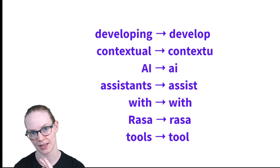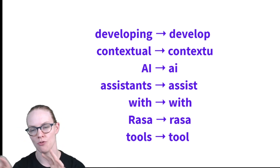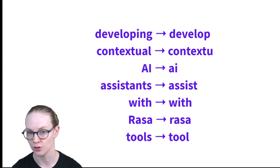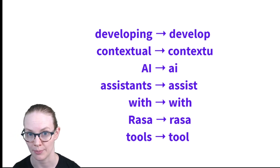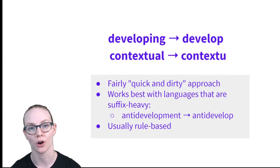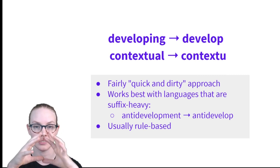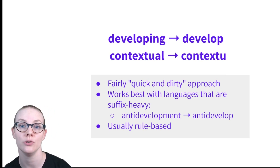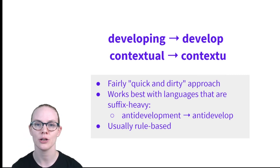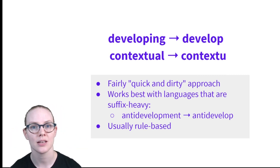Let's start with stemming. Stemming is the process of removing all of the morphemes that came after the main morpheme, or the root morpheme — the one that contributes the most to the word's meaning. Here you can see we've taken 'developing' and removed the '-ing' to make it 'develop,' and 'contextual' where you've removed the '-al' to make it 'context.' The particular word boundary drawn depends on the stemmer you're using — this one is the Snowball stemmer. Stemming is a fairly quick-and-dirty approach, most helpful if you want to consider all words that share the same root morpheme together, such as development, developing, developed, and developer. It tends to work best with suffix-heavy languages; if a language only puts morphemes after the root, stemming is great because you can just knock them off. But if you also put morphemes before the root, stemming won't remove them. And often this is rule-based.